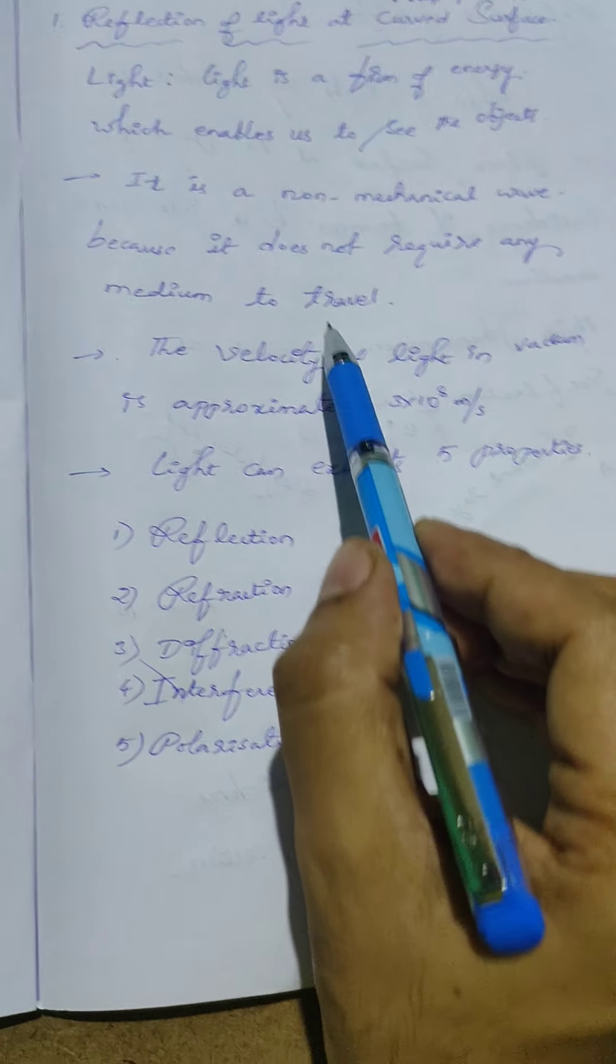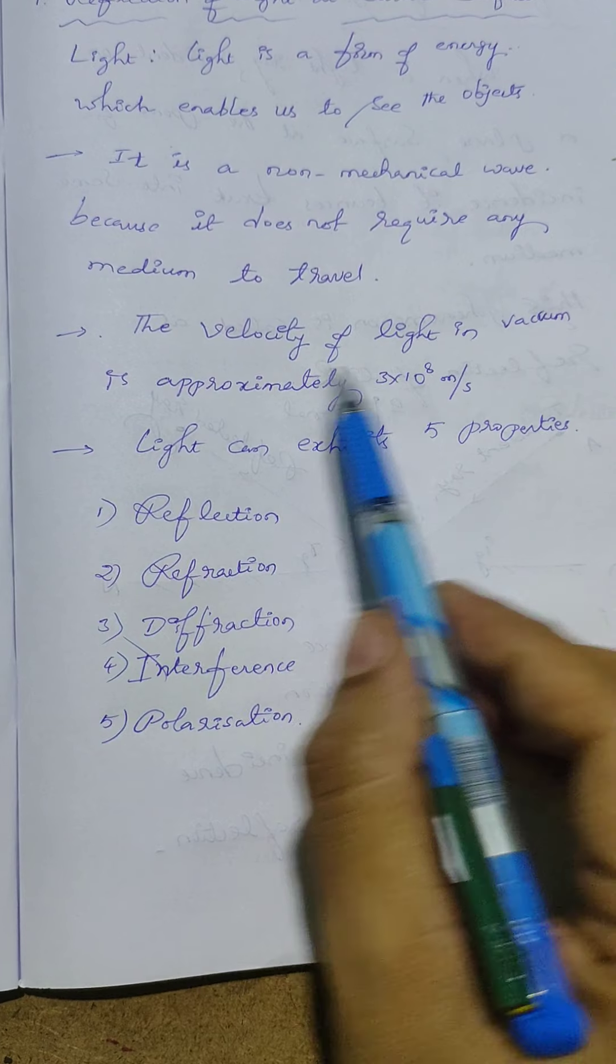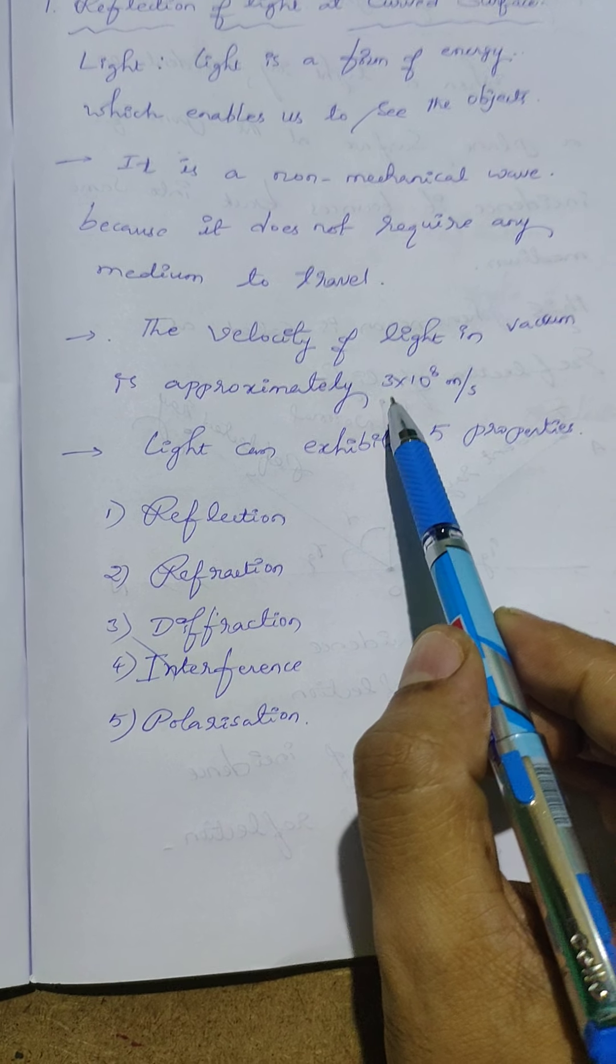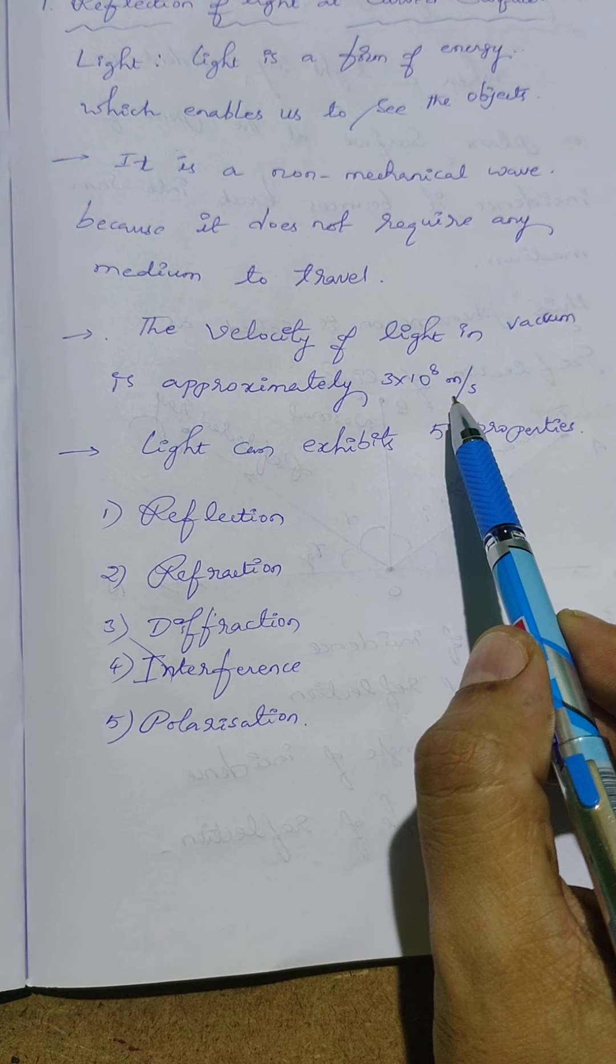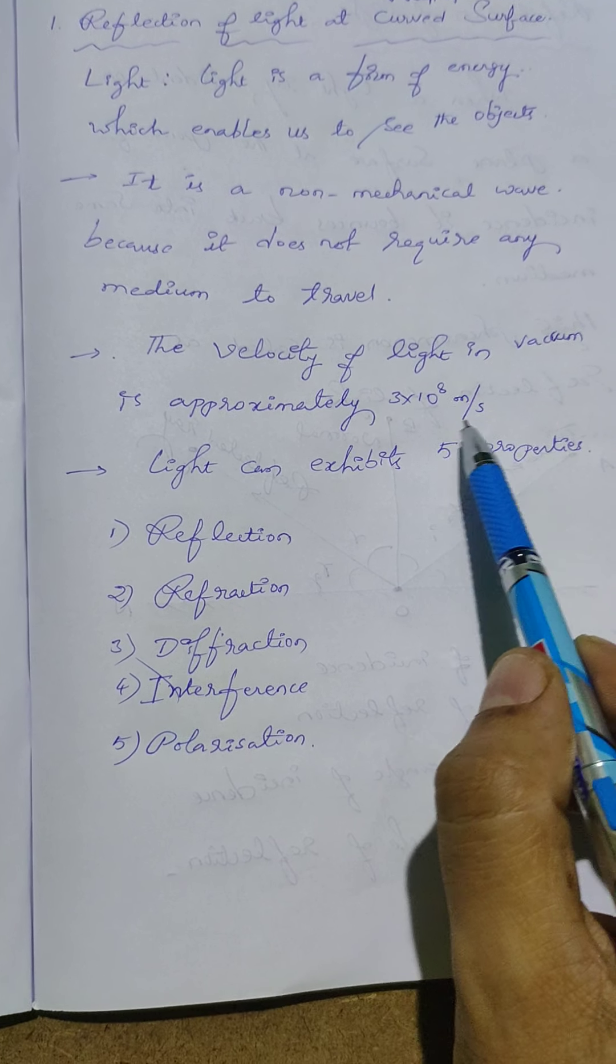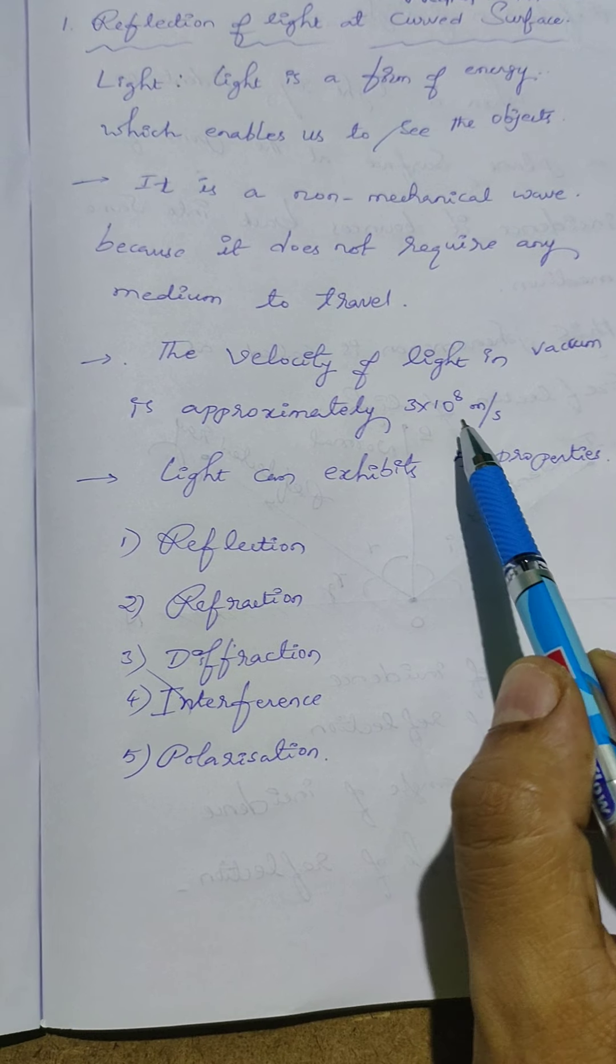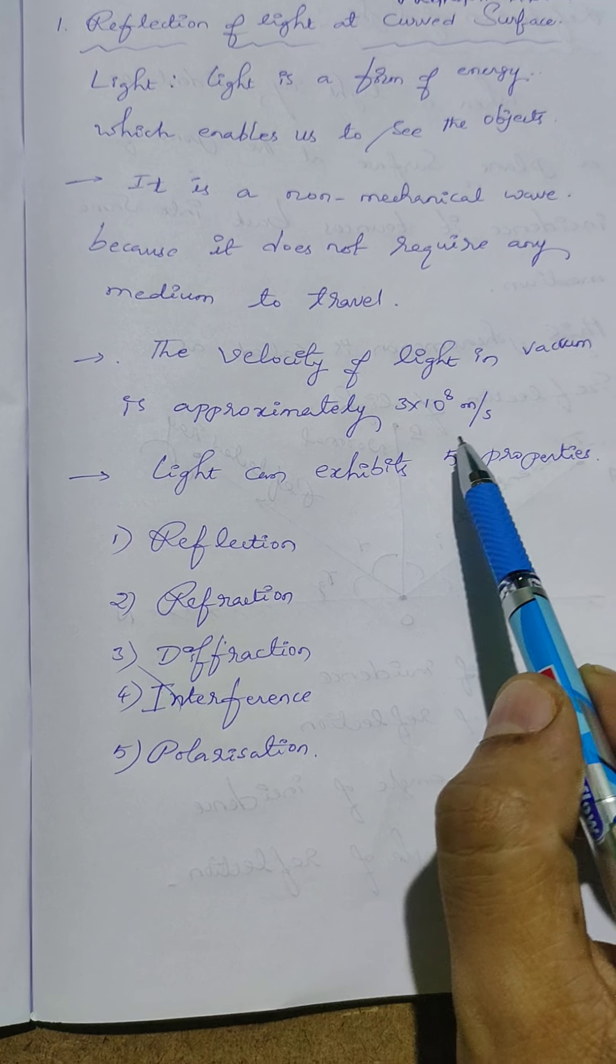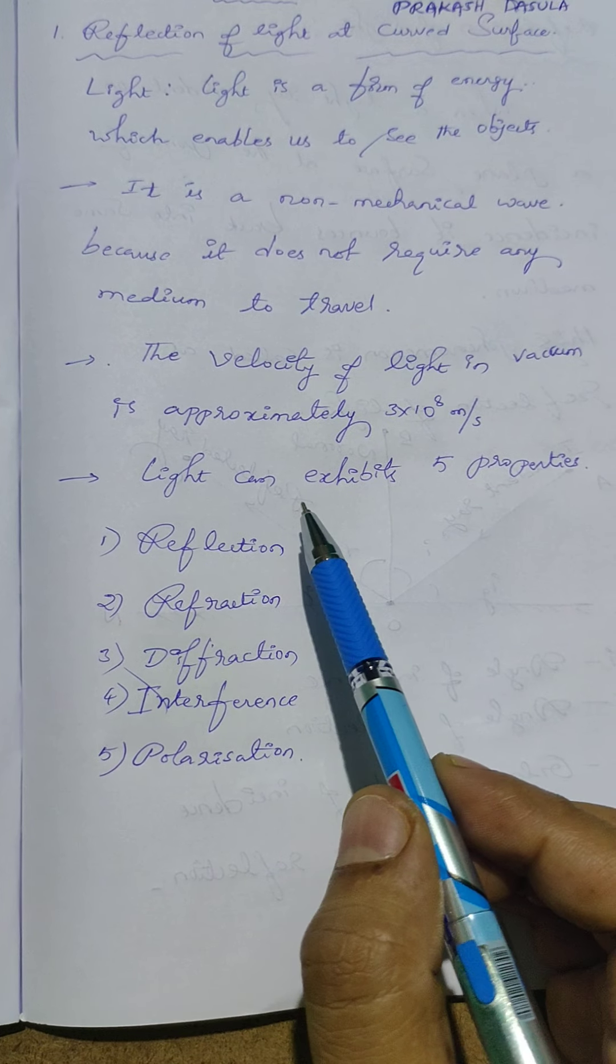The velocity of light in vacuum is approximately 3 into 10 power 8 meter per second. Means per second it travels up to 3 lakhs kilometers for only one second. So how much fast it is.